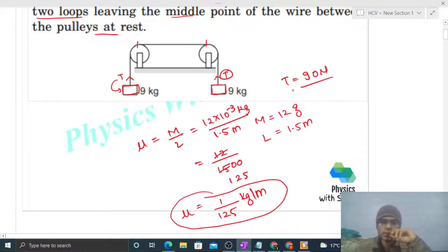You can see we know tension and we know linear mass density, so we can find the speed of the transverse wave in the wire. That will be the square root of T divided by μ. Just put the values: square root of T is 90, and μ...